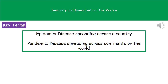Two key terms we should be aware of when thinking about diseases and their spread. The first is an epidemic, which refers to a disease that is able to spread across a country. If we're talking about something more serious — a disease that spreads across entire continents or even the whole world — what we're referring to is a pandemic.